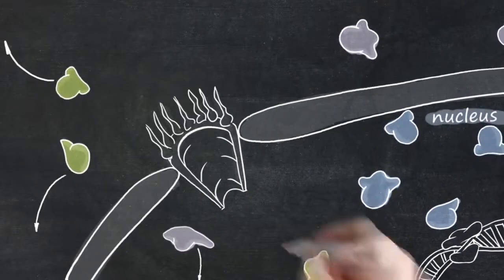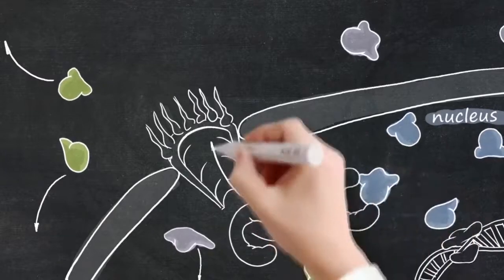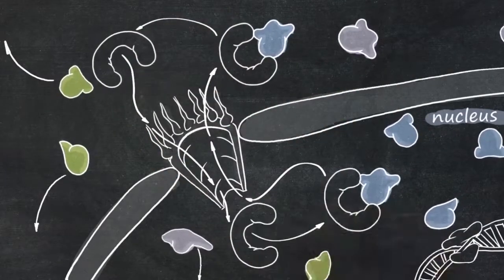XP-01 is a critical transporter which shuttles over 200 different proteins from the nucleus to the cytoplasm.